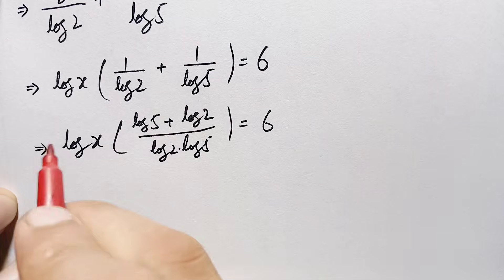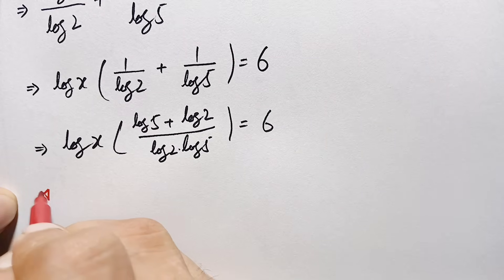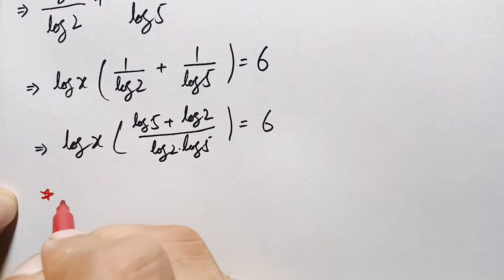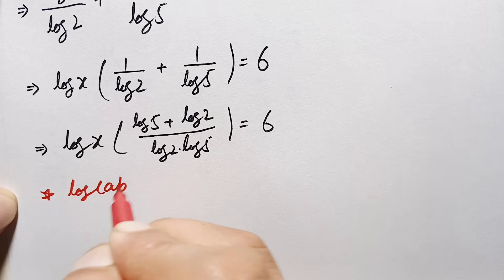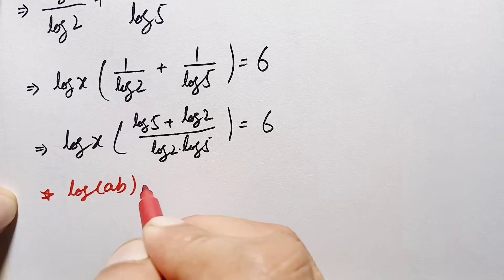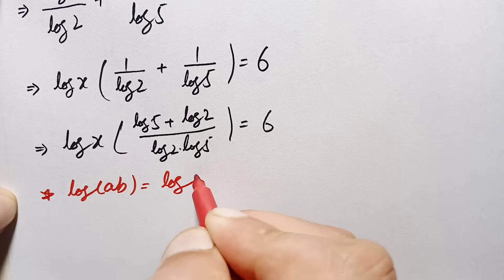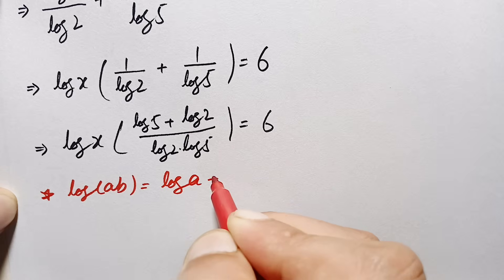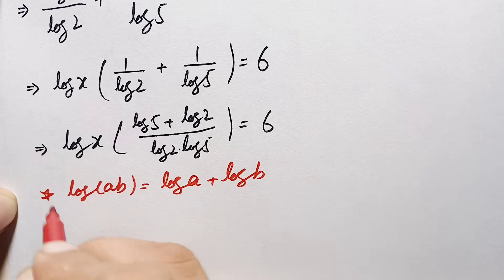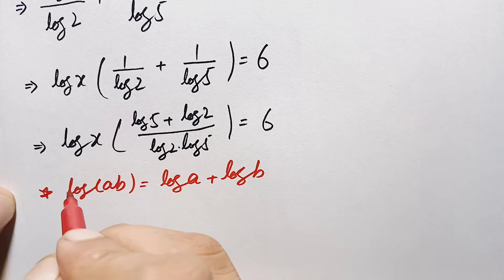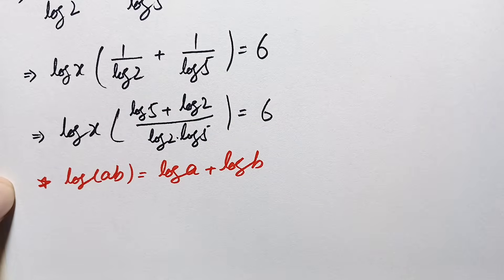Now in the numerator we will use another logarithm property: log of a times b equals log of a plus log of b. So using this property, the numerator log of 5 plus log of 2 will become log of 10.